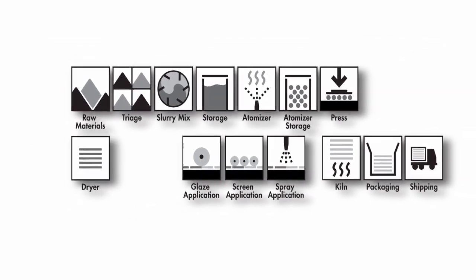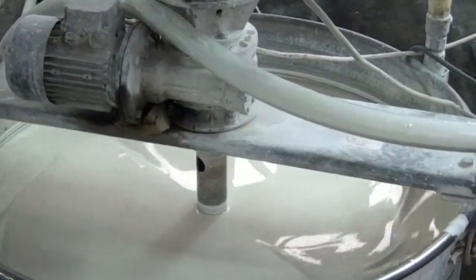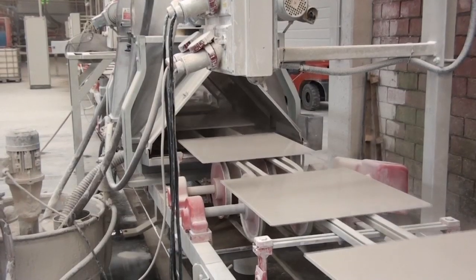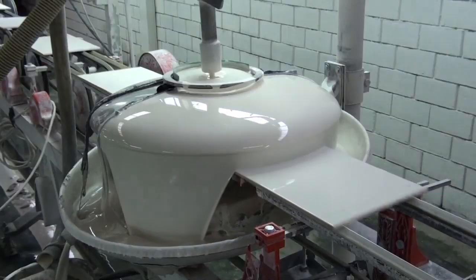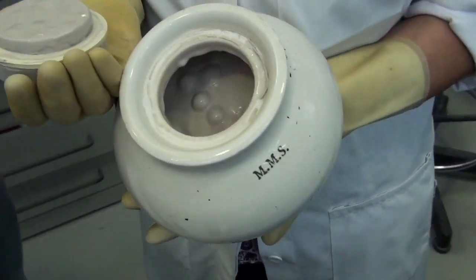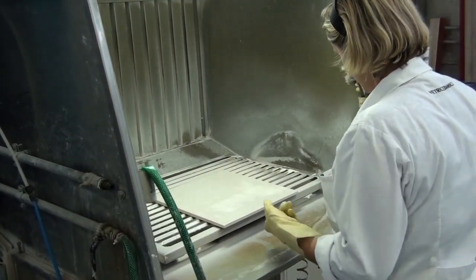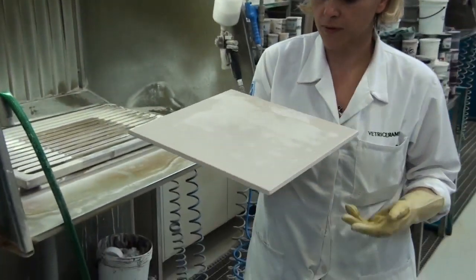Some tile manufacturers deal with glaze manufacturers to develop the perfect recipe for each of their products. Glaze is a glass-like substance that protects and seals the product, but it also has aesthetic properties. It is the composition of the glaze which will determine its reflective properties and color, from matte to glossy and from translucent to dark.